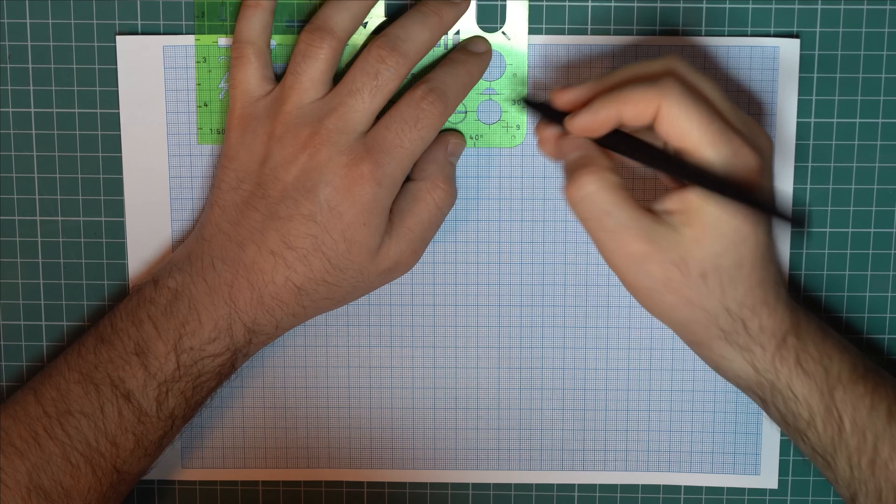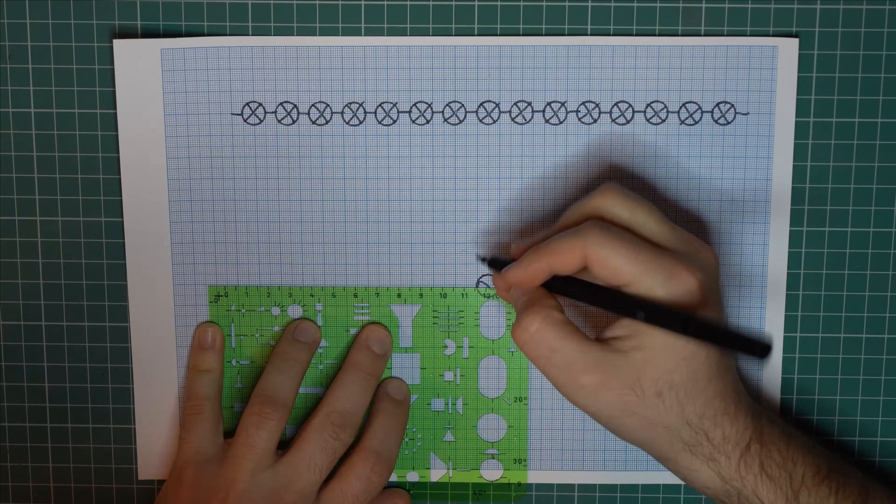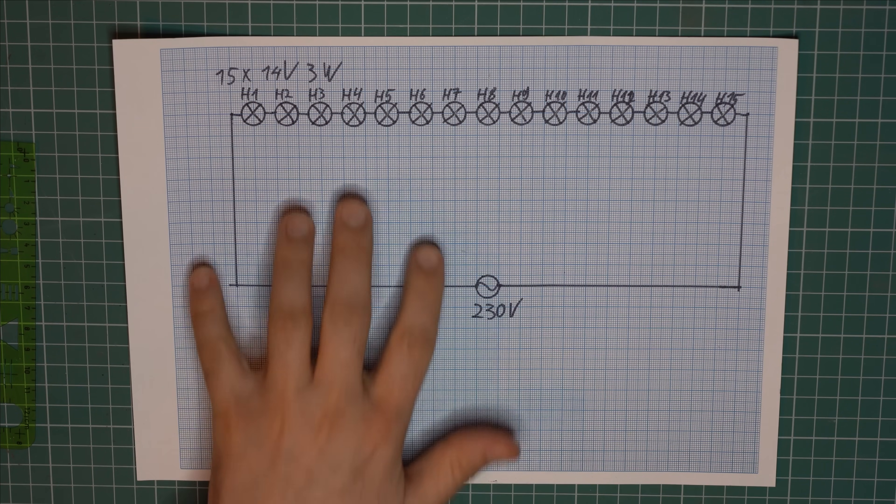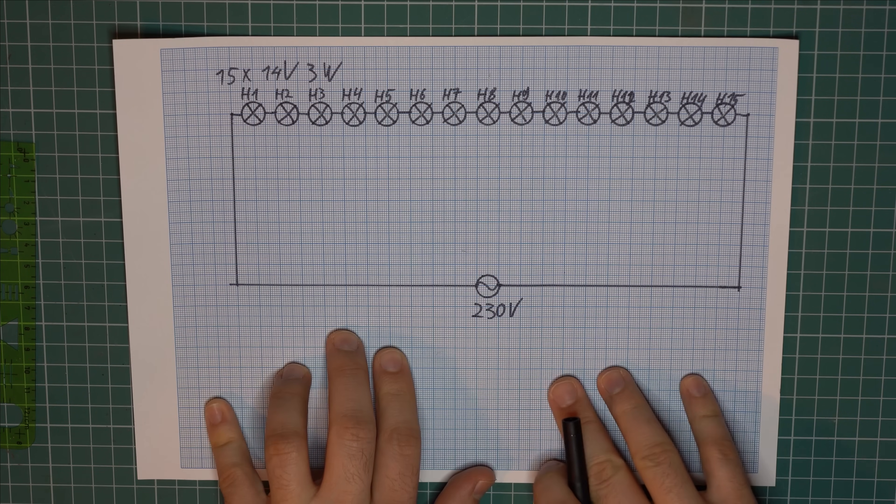So let's see what the schematic looks like for the entire string. So this is basically the schematic for the whole string.